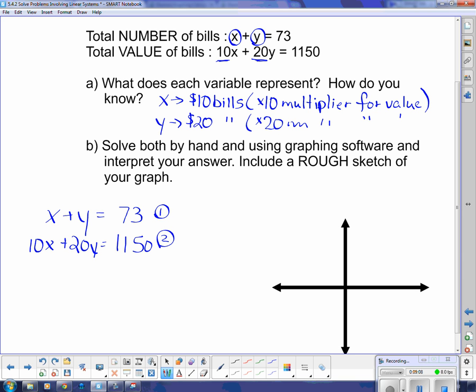So I'm going to do this one by elimination, which means I need to get the same number either in front of the x's or in front of the y's. And if I multiply my x by 10, I can get the same number in front of the x's. Now if I multiply the first equation by 20, I'll get the same number in front of y's. But I'm going to take the smaller one. So I'm going to say equation 1 times 10. And then I'm going to multiply everything in equation 1 on both sides of the equation by 10. So I get 10x plus 10y equals 730.